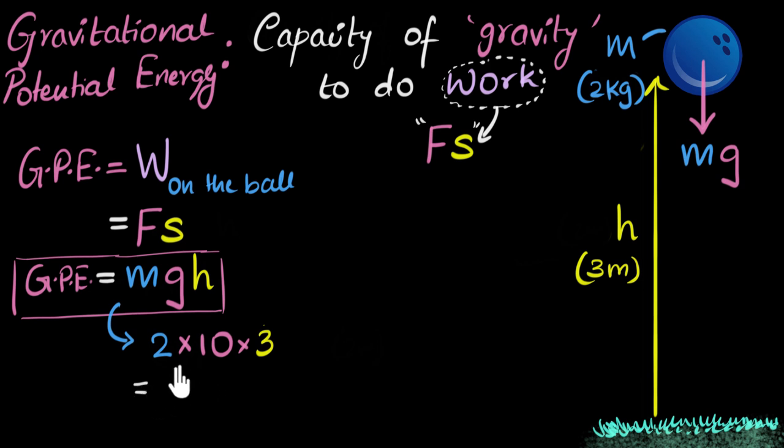So the potential energy of this ball is 60 joules. And what does that mean? This means that if I let go of this ball, then gravity will do 60 joules of work in pushing that ball or pulling that ball from here to here.